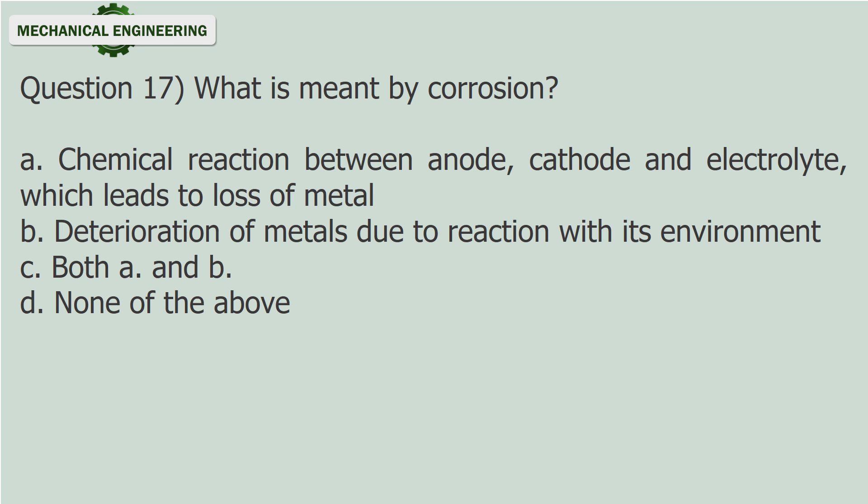Question 17: What is meant by corrosion? A. Chemical reaction between anode, cathode and electrolyte, which leads to loss of metal. B. Deterioration of metals due to reaction with its environment. C. Both A and B. D. None of the above.